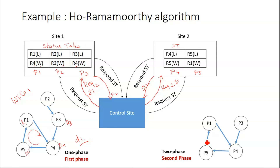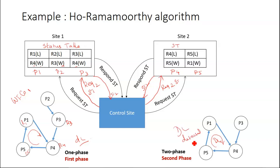There is again a deadlock. Deadlock detected — there is a cycle — and it is confirmed. The deadlock is now confirmed. That is how the second phase works.